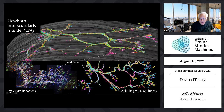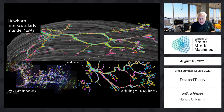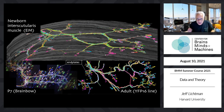At birth, every neuromuscular junction has lots of axons — all are multiply innervated. At postnatal day seven, about half of them are multiply innervated. In the adult, there are no multiply innervated junctions. This is not due to axon death — it's just that axons start out making a lot of branches and then prune their branches away until each muscle fiber is singly innervated.